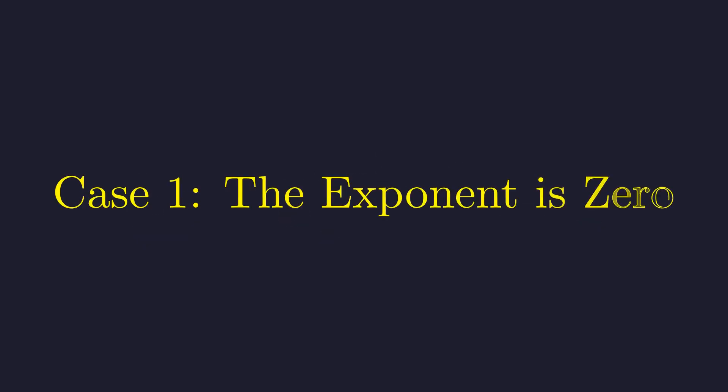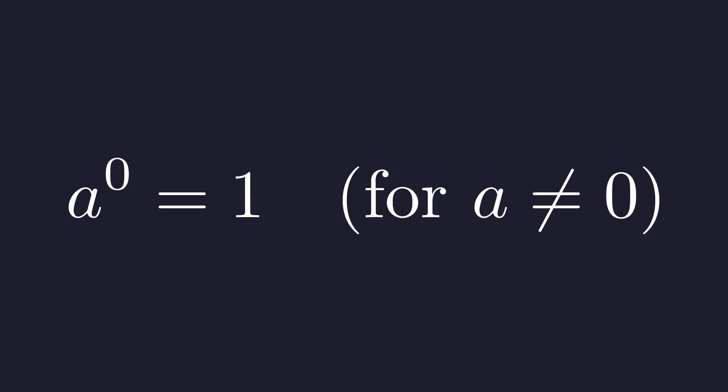Our first case is the most common one. Any non-zero number raised to the power of 0 is 1. This means we can set the exponent equal to 0, with the crucial condition that the base must not be 0.